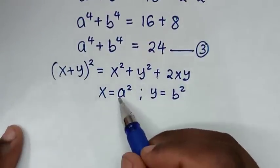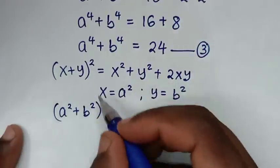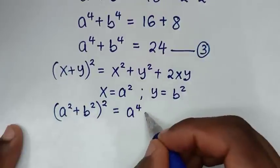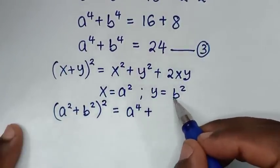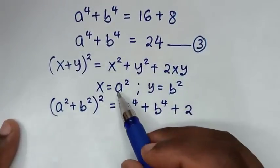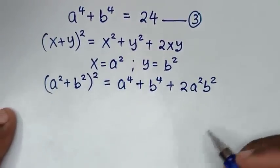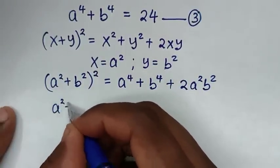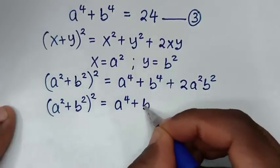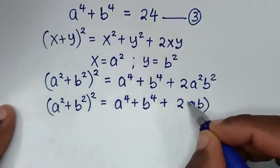So x plus y becomes a² plus b², and (a² + b²)² equals x² plus y² plus 2xy, which is a⁴ plus b⁴ plus 2a²b². And 2a²b² is the same as 2(ab) squared.